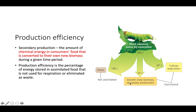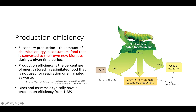To figure out the production efficiency, we take the net secondary production times 100% divided by the assimilation of primary production. For birds and mammals, production efficiency is typically between 1 and 3%. To review: of the 100 joules assimilated, we cannot count the 67 joules lost to respiration — only the 33 joules out of the total 200 joules counts toward production efficiency.